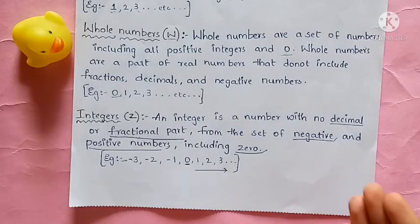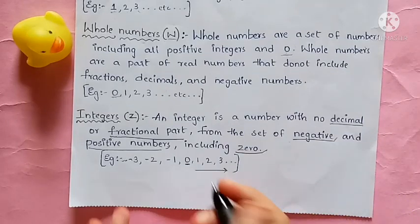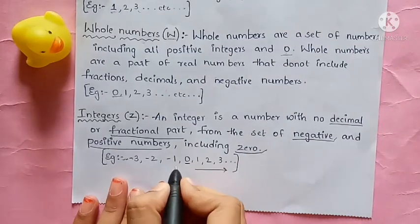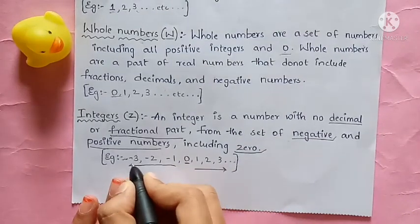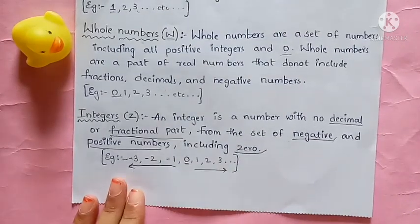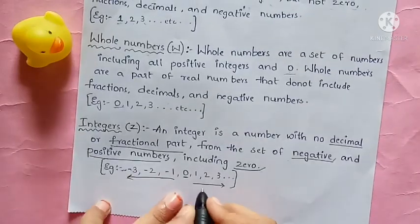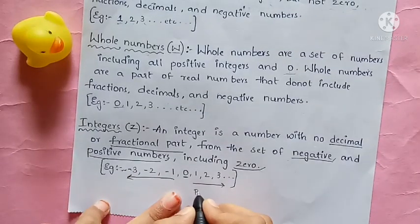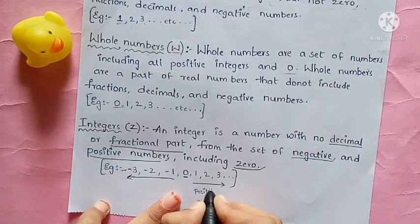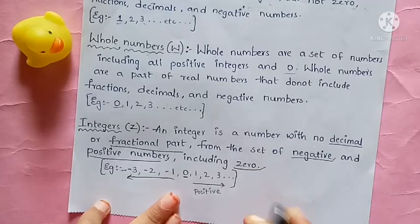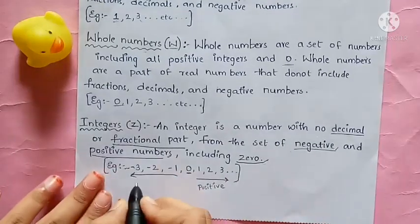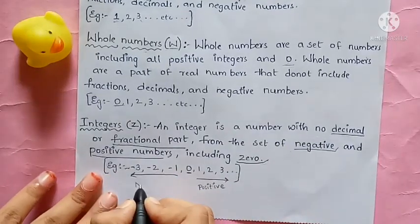The right side of the number line contains positive numbers, and the left side contains negative numbers.